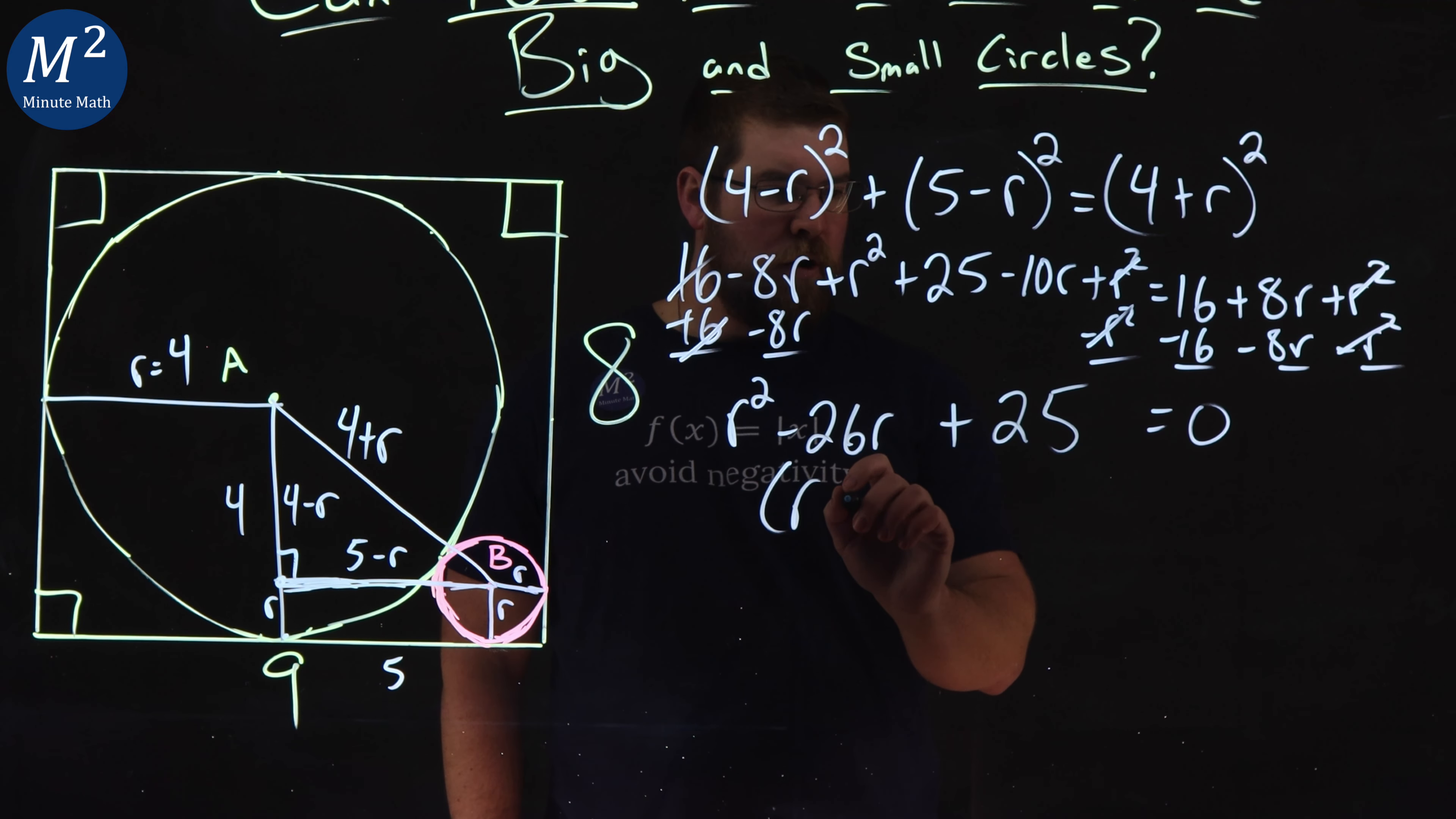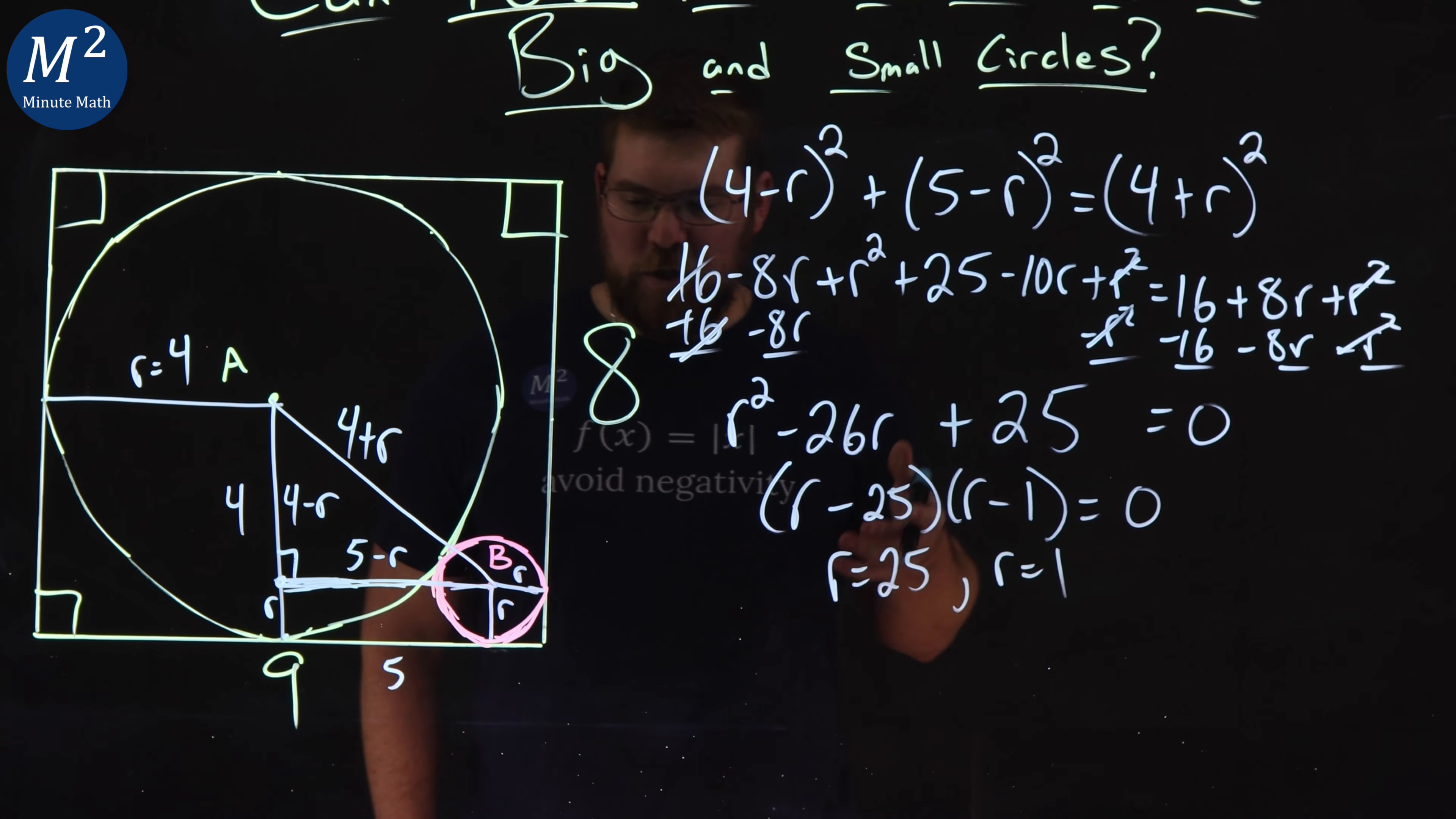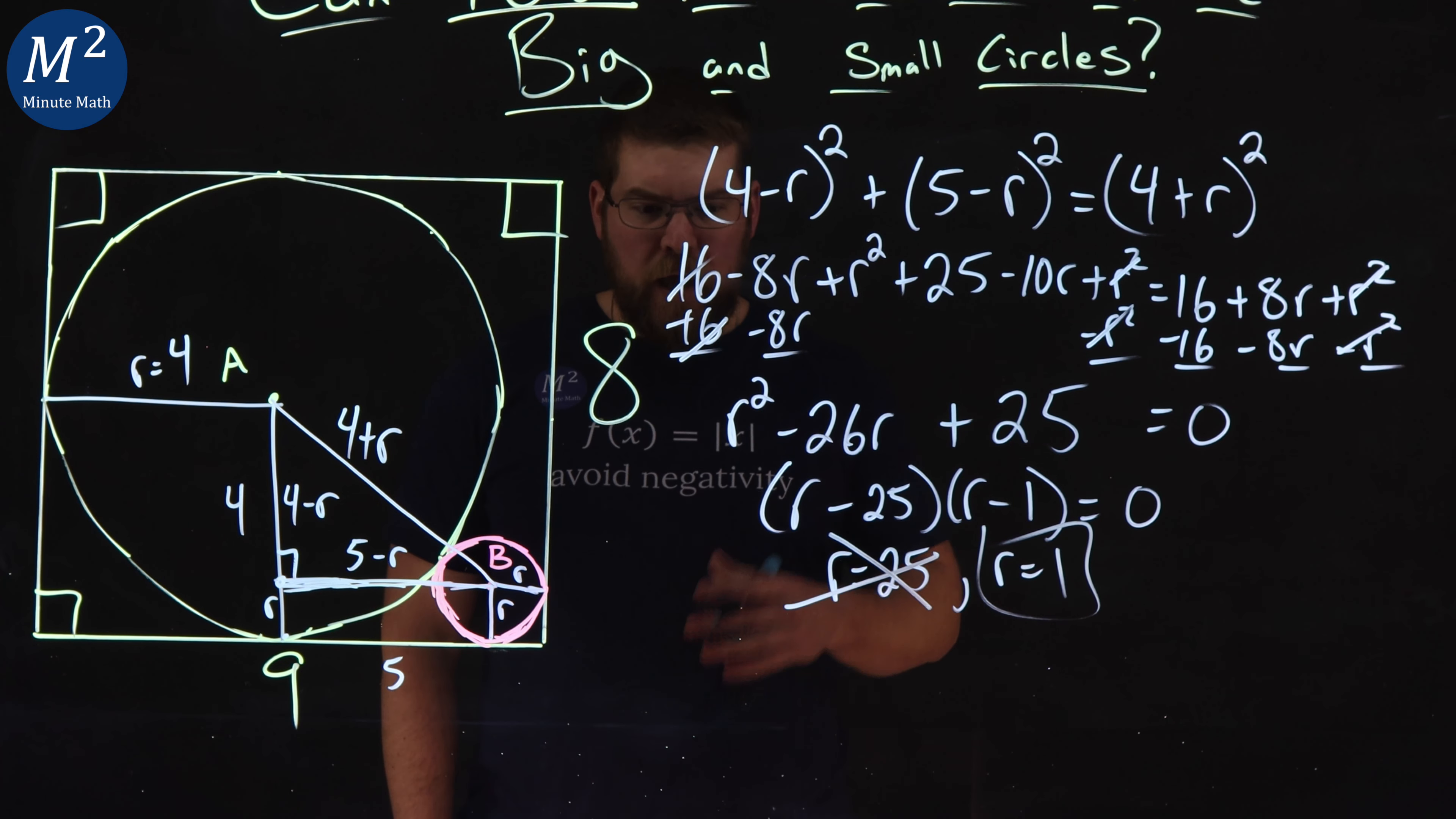This can factor. We have R minus 25 and R minus 1 equals zero. Moving on, we solve each individual for R, and R can equal 25 or R can equal 1. Which one applies to our problem? Well, 25 clearly can't be R because if that was the radius of little circle B, that would go way past the square. Don't worry about that. Let's deal with R equal to 1.